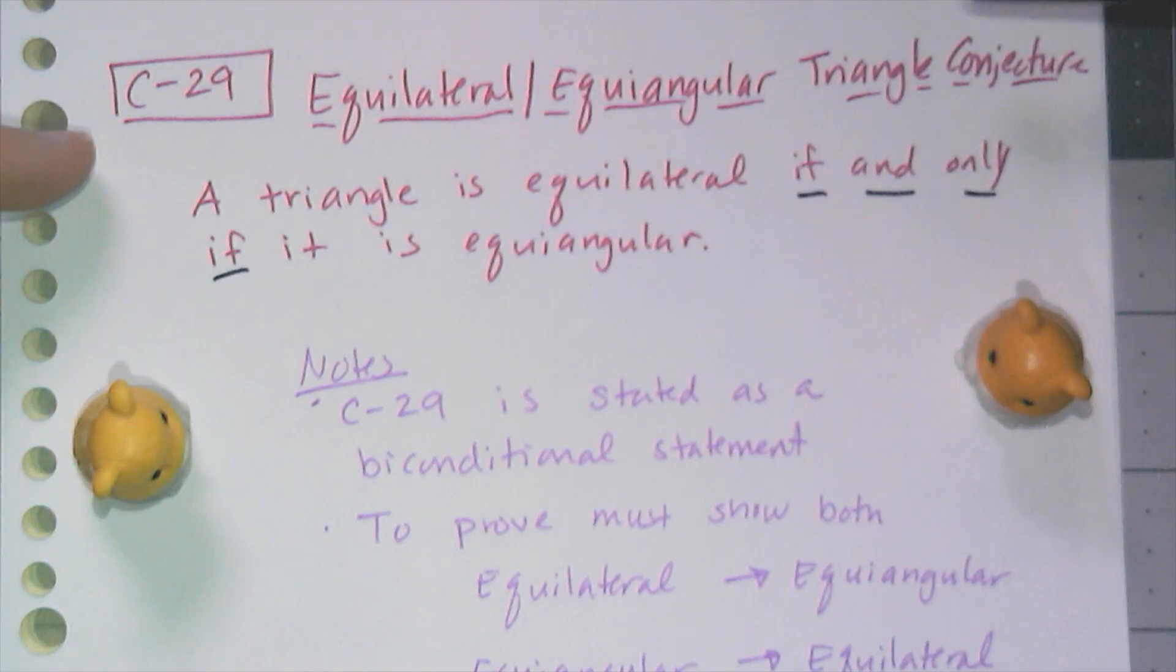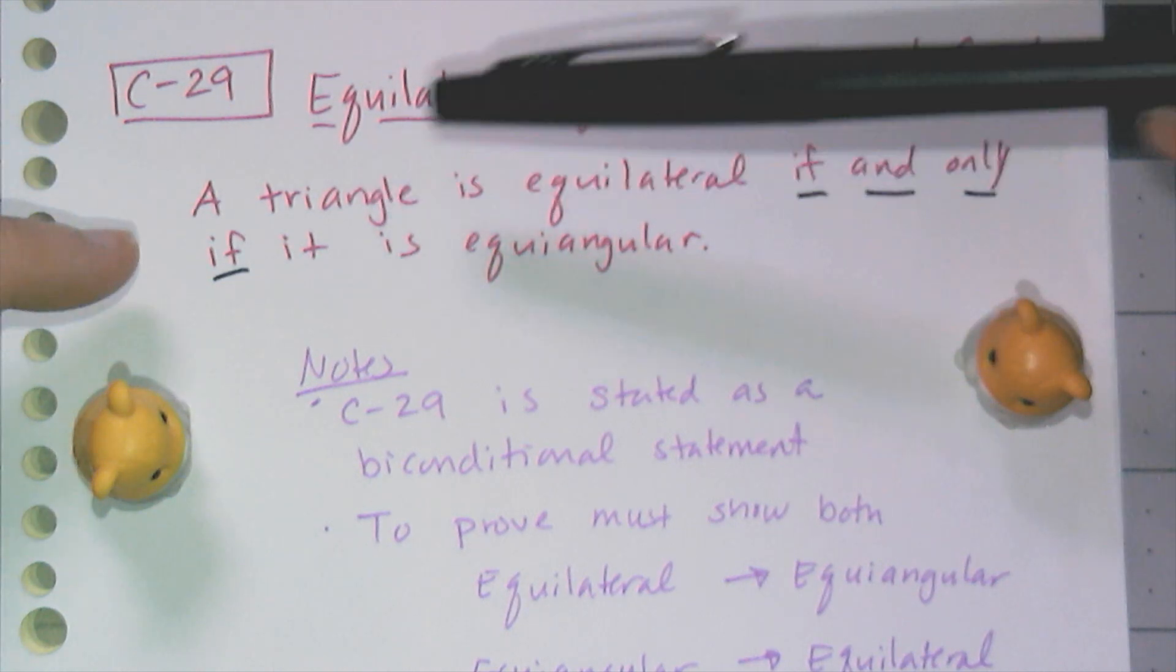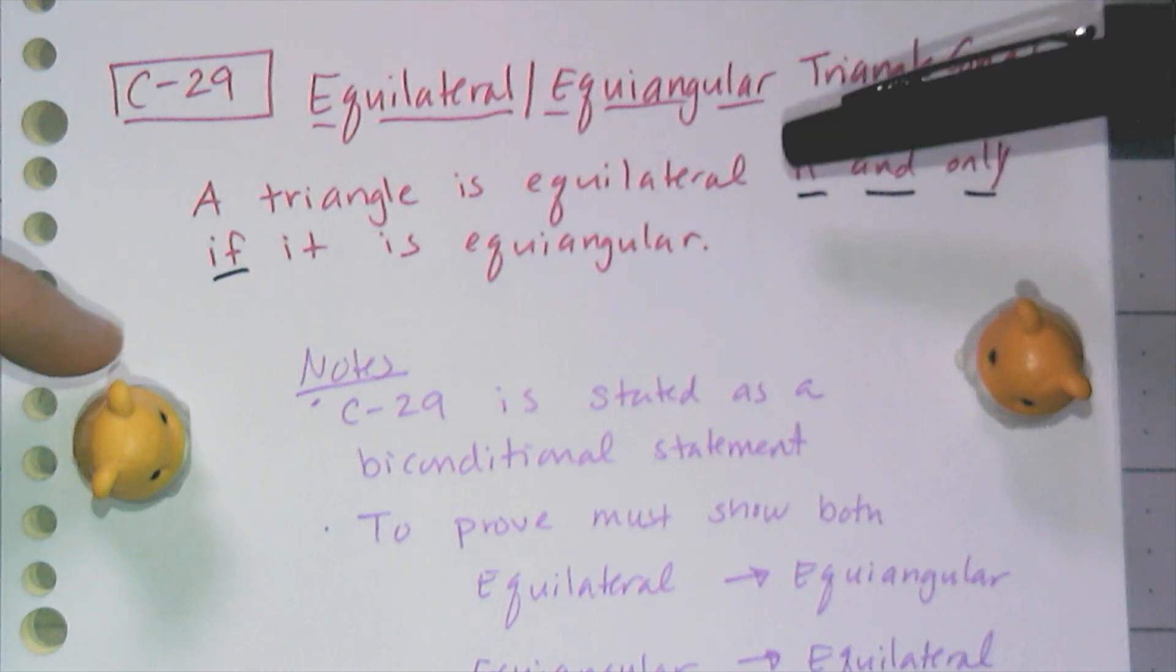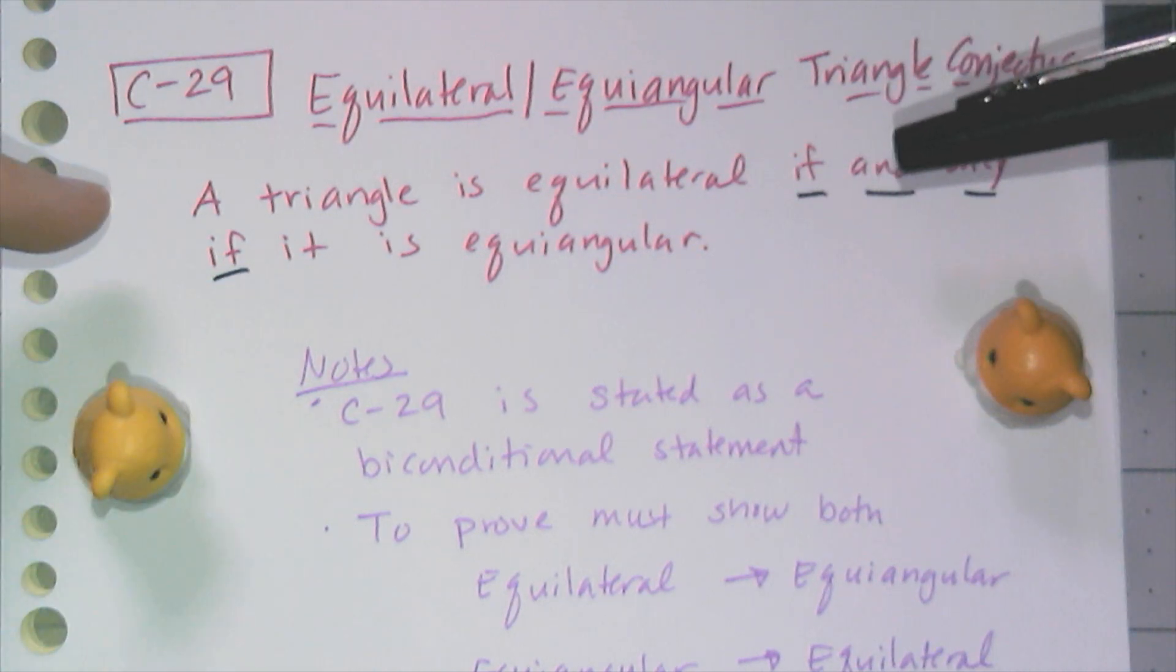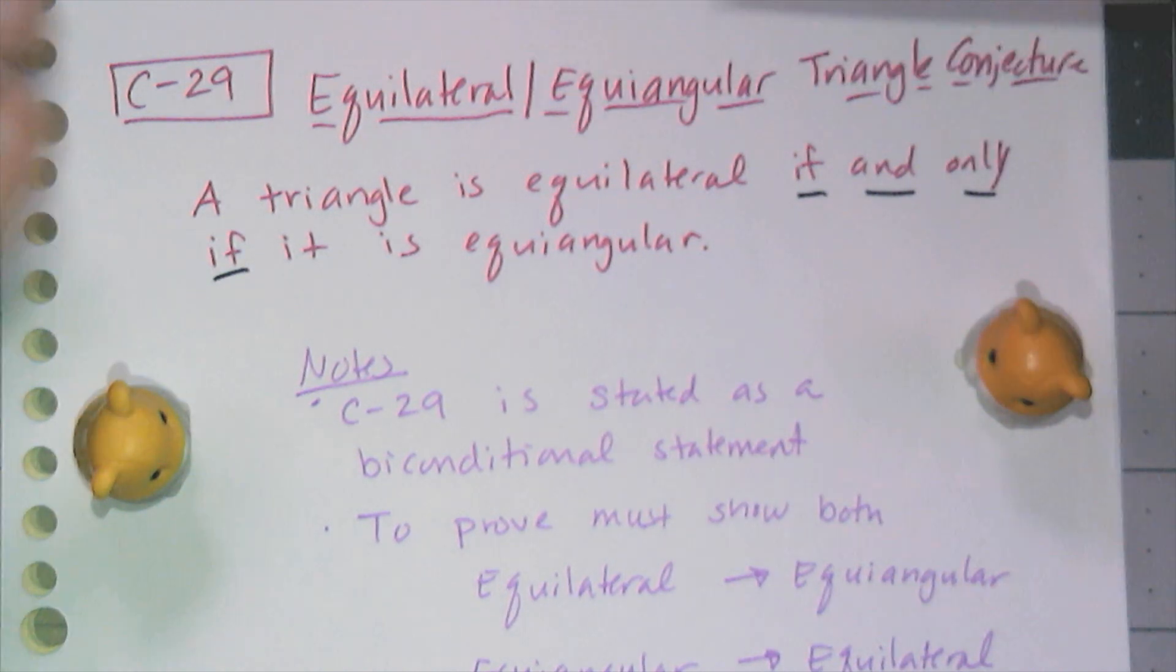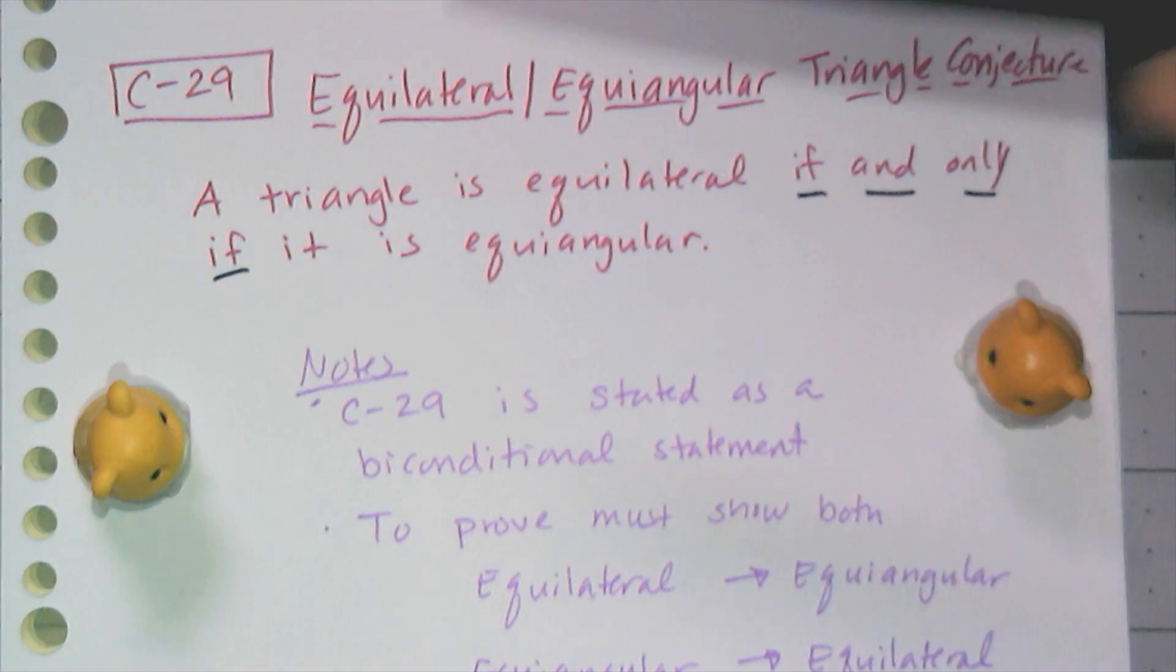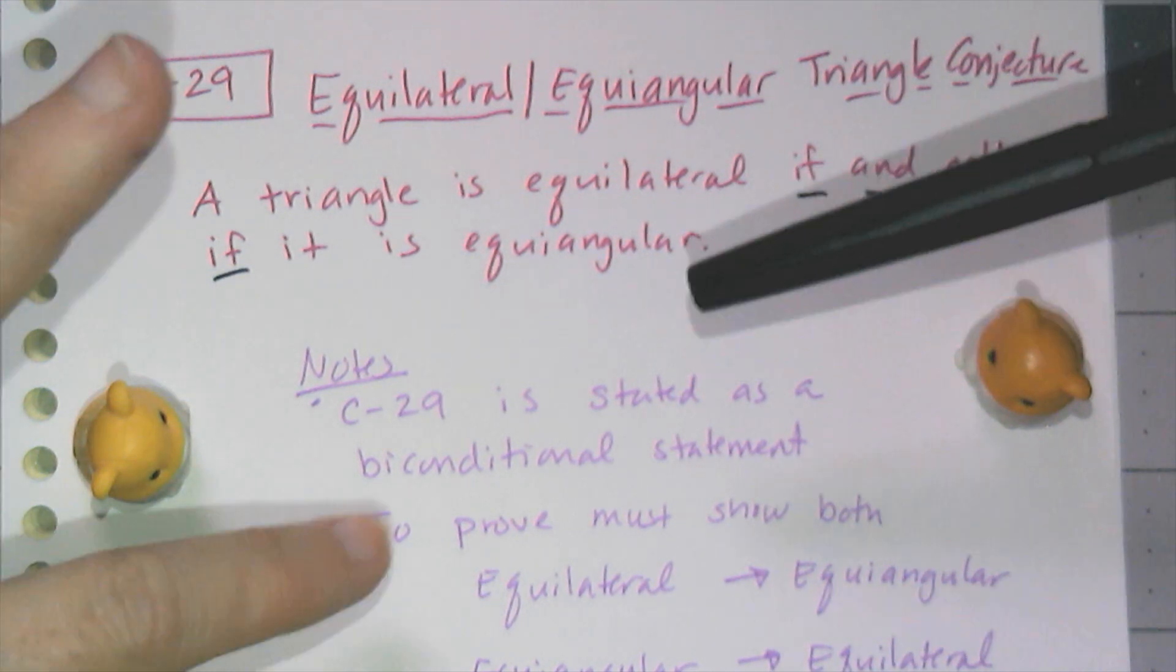And so now our final conjecture, the equilateral equilangular triangle conjecture. A triangle is equilateral if and only if it is equilangular. We kind of already knew that was true. I'm presenting this one now for a specific reason, because of this if and only if, to remind you that this is what's considered a biconditional statement. Basically what I have is two conjectures. One is the converse of the other, but they're both true. So if I have a triangle that's equilateral, then I know it's equilangular. And then I can swap the two. If I have an equilangular triangle, therefore then I know it's equilateral.